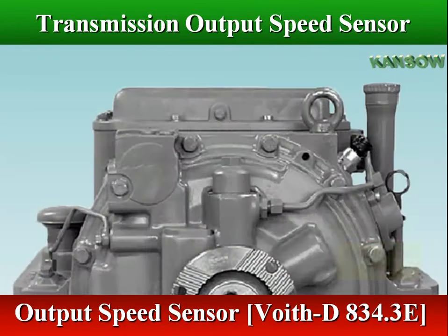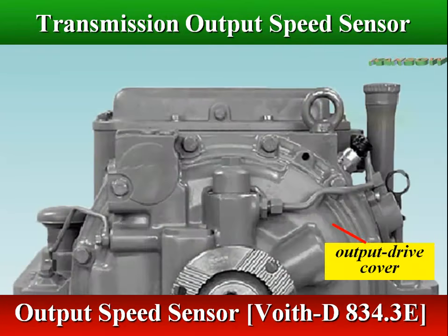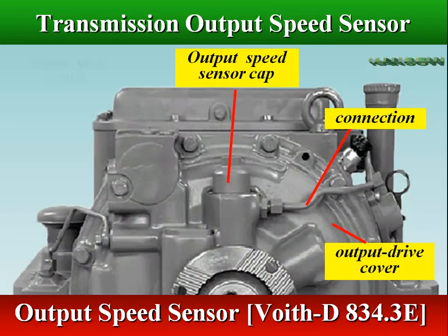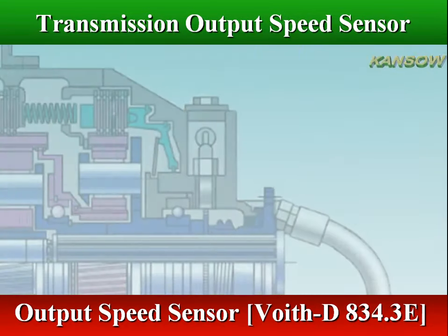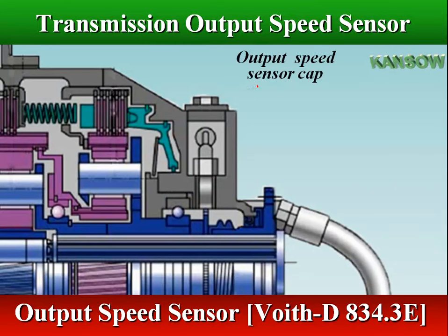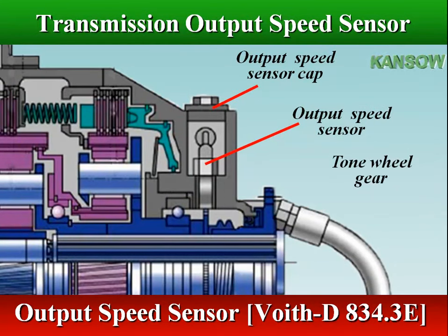In Voith-Diwa-3 transmissions, the output speed sensor is mounted externally in the output drive cover and directed at the teeth of a tone wheel gear splined to the output shaft.